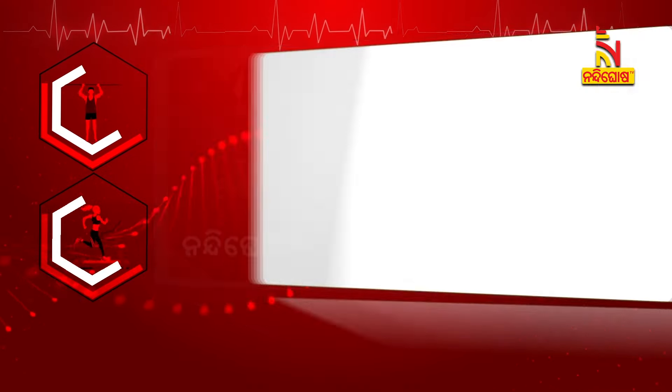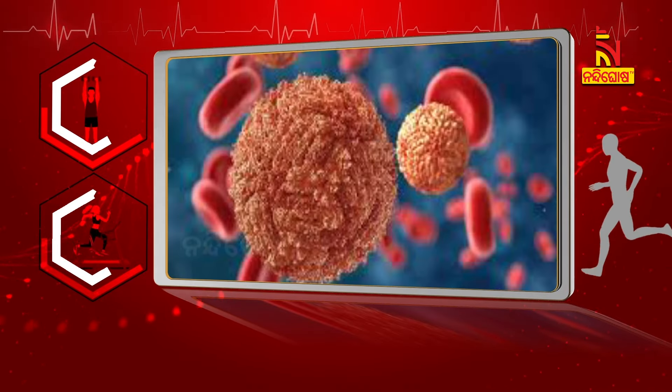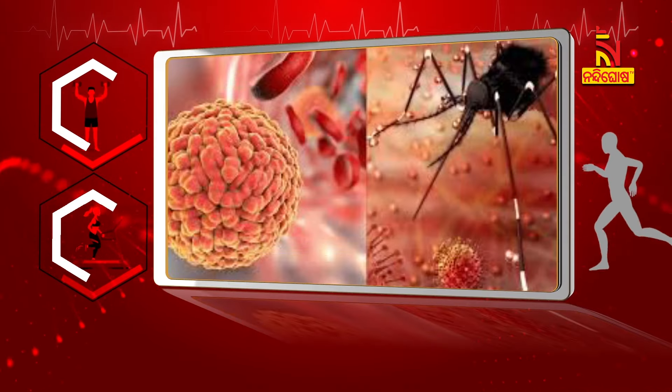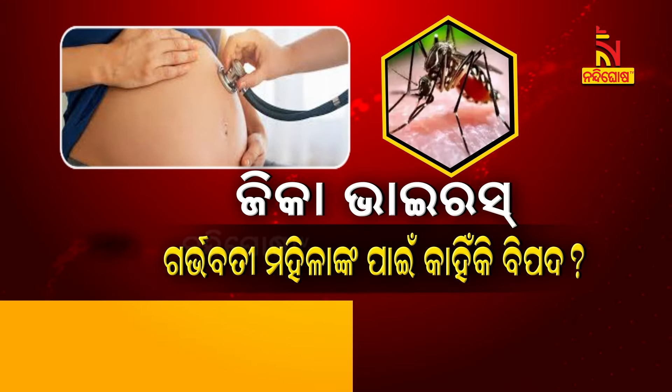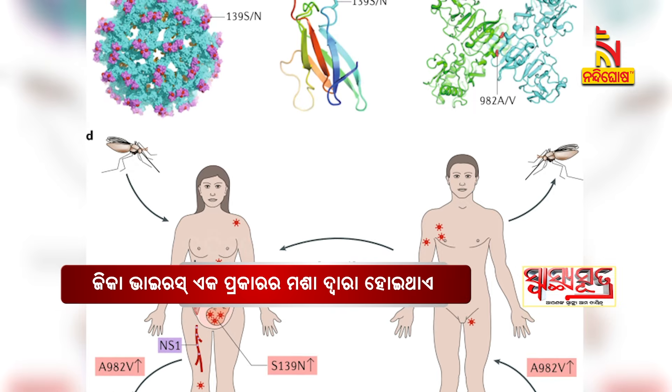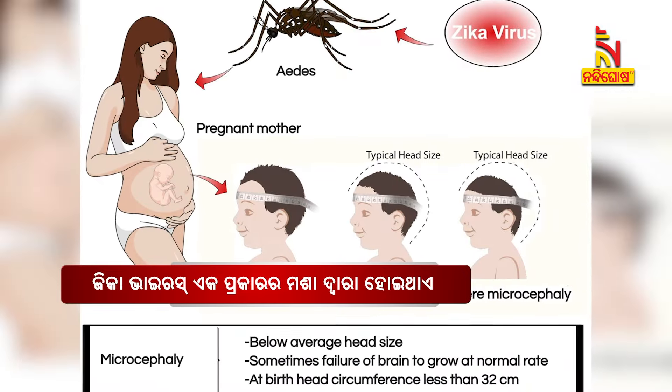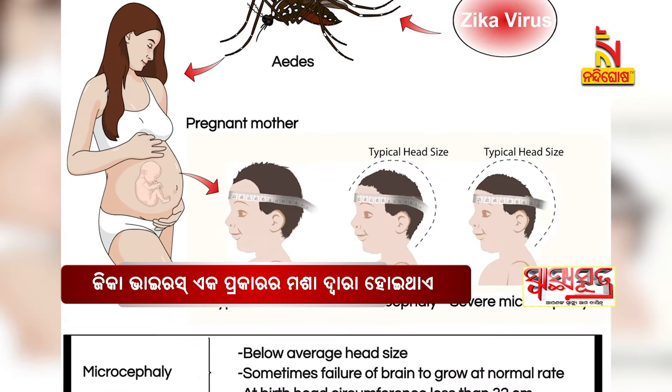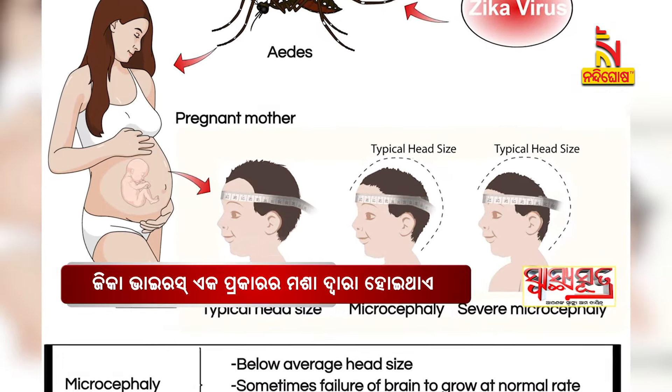What is the case of the Zika virus in India? We have seen the Zika virus in India. The Zika virus is spread by mosquito bite, the same mosquito as malaria, but the virus is mainly found in Africa regions.